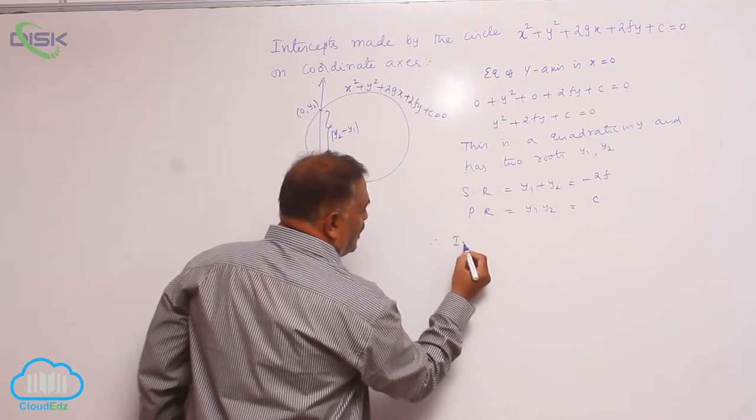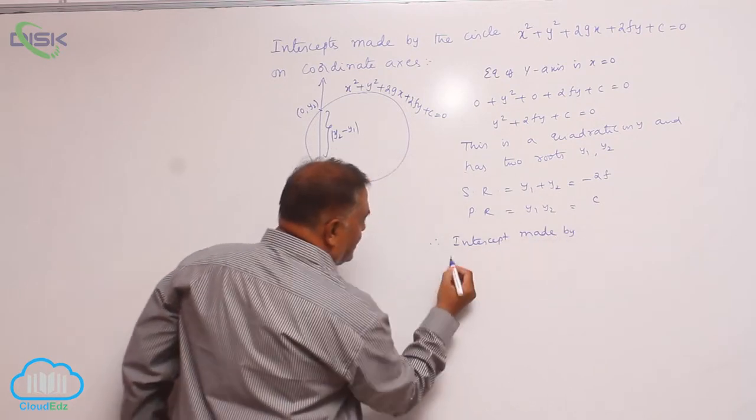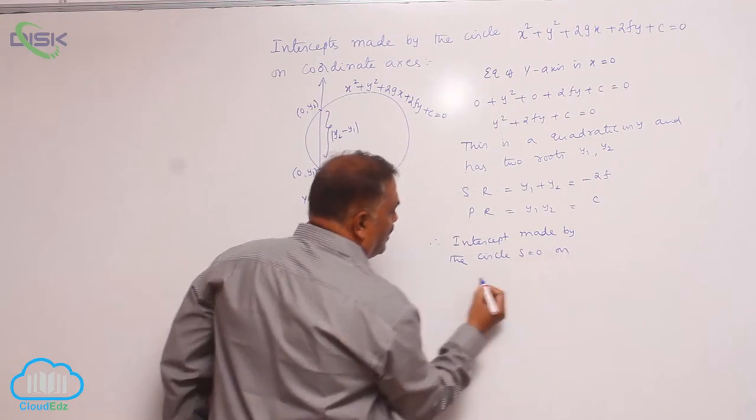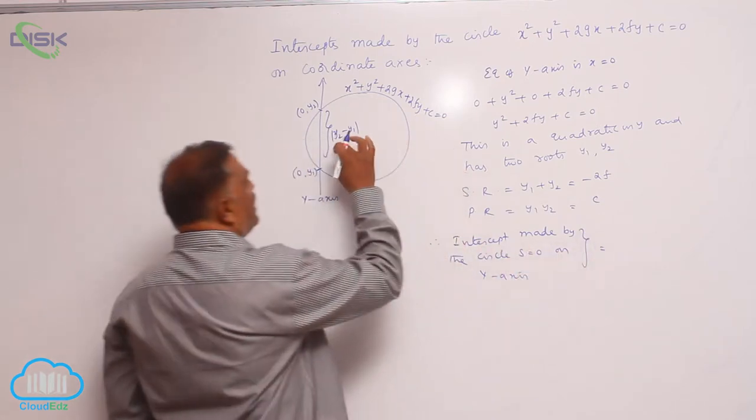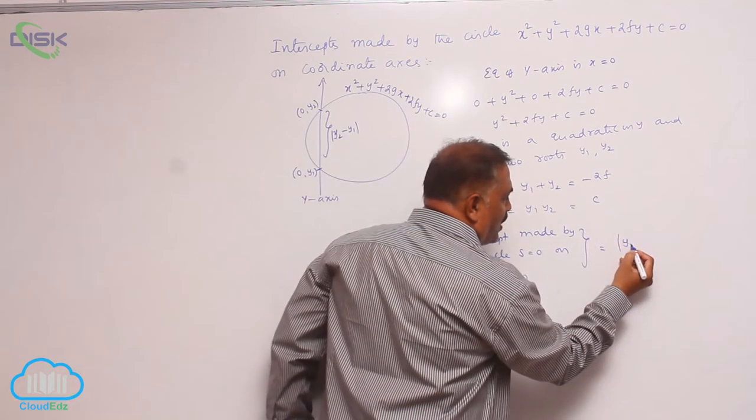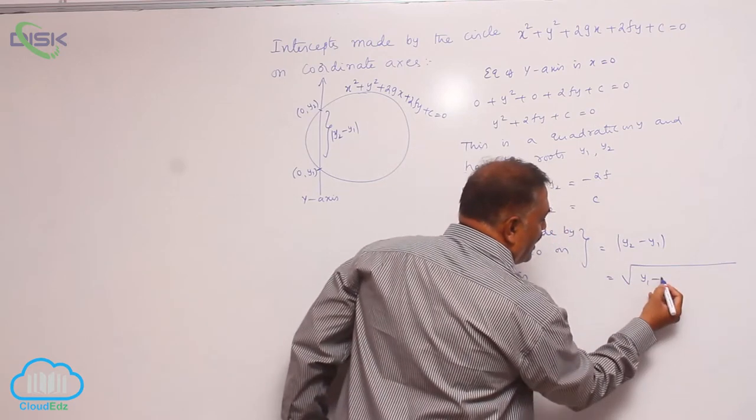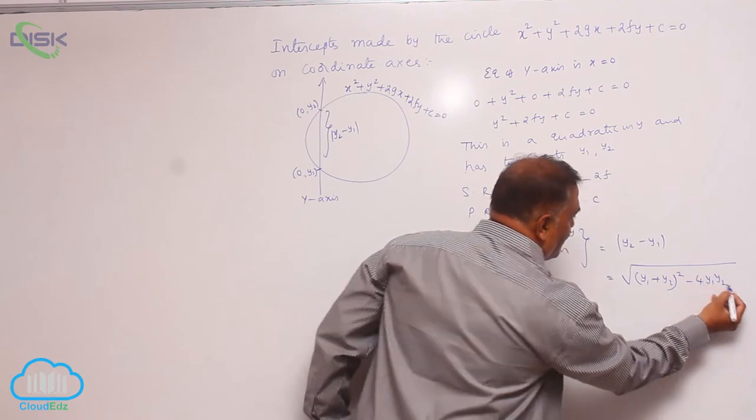Therefore, the intercept made by the circle s equals 0 on the y-axis is given by, as I indicated here, modulus y₂ minus y₁. This is square root of (y₁ plus y₂) whole square minus 4y₁y₂.